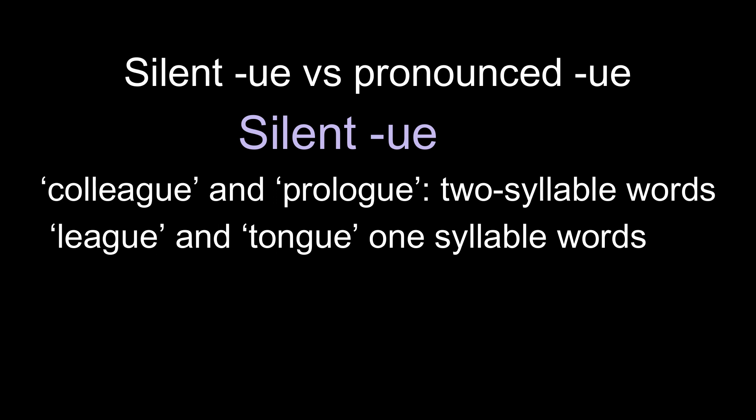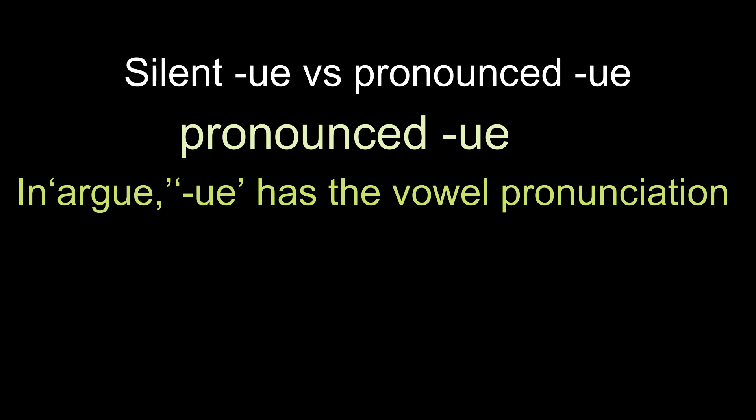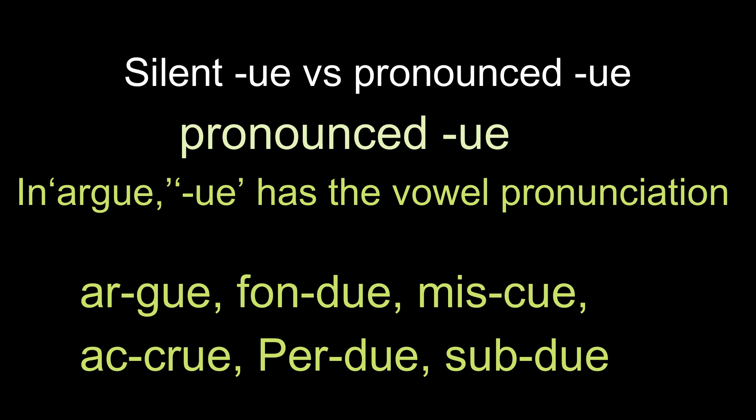Words like colleague and prologue are two-syllable words as the ending UE is silent. This is why league and tongue are one-syllable words. Words ending with silent UE are syllabized as follows: colleague, prologue, fatigue. In argue, however, UE has the vowel pronunciation. These words have the vowel sound with UE: argue, fondue, miscue, accrue, perdue, subdue.